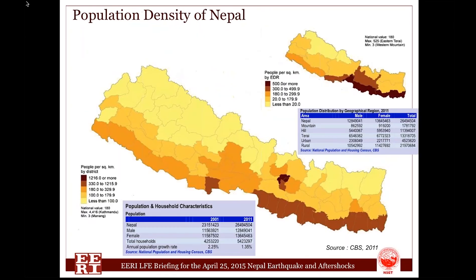The population of Nepal based on the 2011 census is 26.5 million, with an average population growth rate of 1.35 percent per year. The average population density is 181 persons per square kilometer, with a maximum density of 500 persons per square kilometer in Kathmandu Valley and a few southern districts of Nepal.